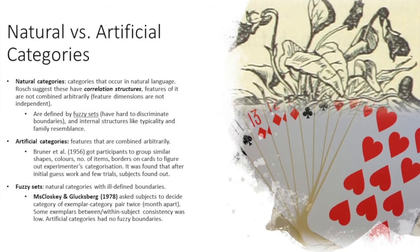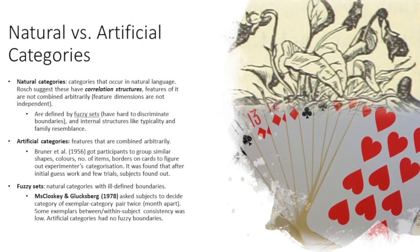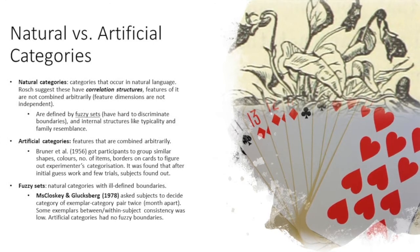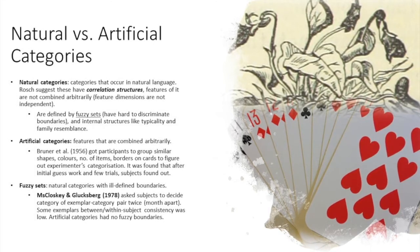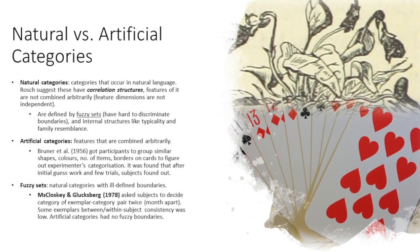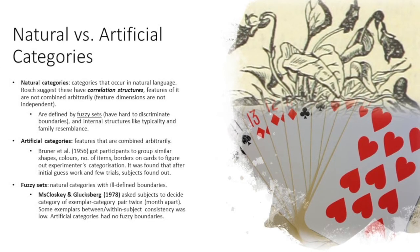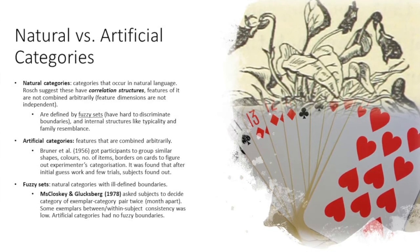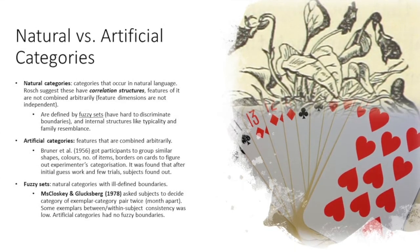Artificial categories are features that are combined arbitrarily. Bruner et al. 1956 got participants to group similar shapes, colors, number of items, borders on cards to figure out experimenters categorization. It was found that after initial guesswork and a few trials, subjects found out what the categorization pattern was.